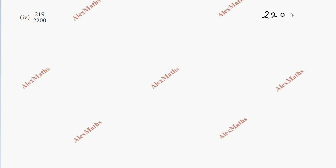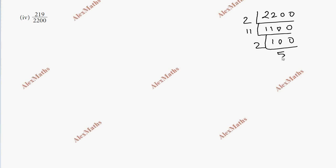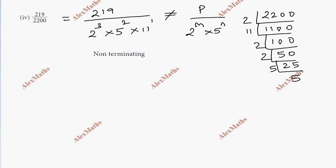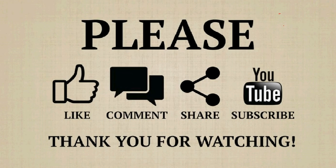We take the denominator 2200: 2 times 1100, 2 times 550, 2 times 275 — then 5 into 25, 5 into 5. So the denominator is 2 power 3 into 5 power 2 into 11, giving us 2 power 3.